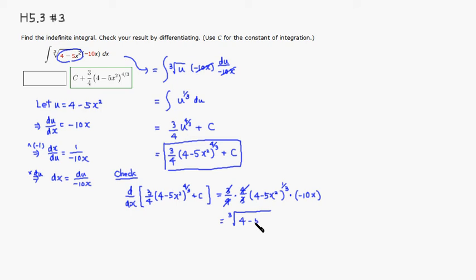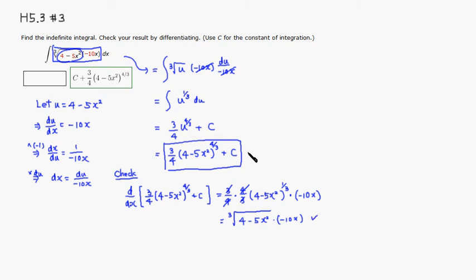What we get is the cube root of (4 minus 5x squared) times negative 10x — which is exactly the same as the original integrand. This confirms we have the right anti-derivative. That's it, I hope that was clear.